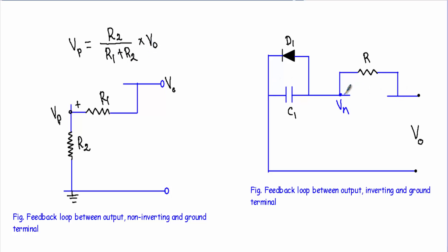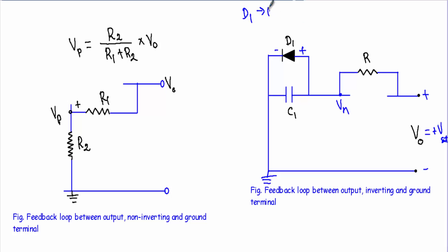At the inverting terminal feedback loop, the output terminal is connected with the inverting terminal through feedback resistor R, and the inverting terminal connects to ground through a parallel network of capacitor C1 and diode D1. When the output voltage is plus Vsat, the positive terminal connects to the P-side of diode D1 and the negative terminal to the N-side, meaning D1 is in forward bias and is replaced by a short circuit.